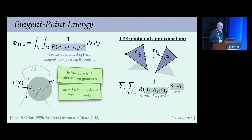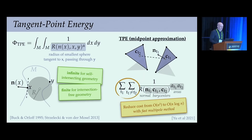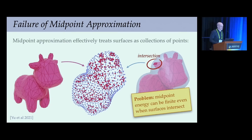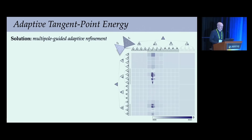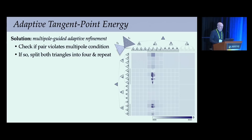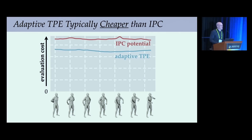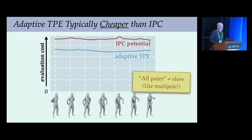One way to approximate tangent point energy is to sum over all pairs of triangle centers, accelerated from O(n²) to O(n log n) using a fast multipole method. However, since we treat each triangle as a point, the energy can still be finite even when two surfaces intersect. So we introduce a new adaptive version of tangent point energy that continues the multipole scheme below the level of individual triangles, with a carefully crafted multipole acceptance criterion. If a triangle pair violates the multipole condition, we split both triangles into four and repeat—giving an infinite energy barrier even for coarsely meshed regions at negligible extra cost. In fact, tangent point energy with a multipole method can actually be faster than the IPC potential, just as a bounding volume hierarchy makes ray tracing efficient.